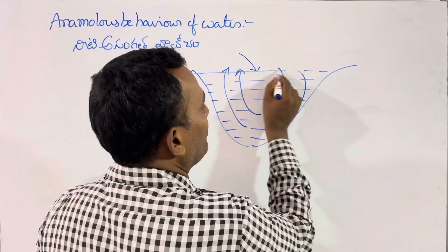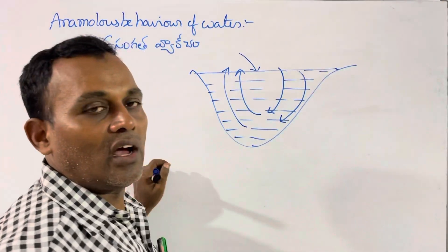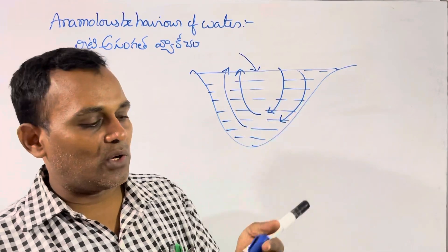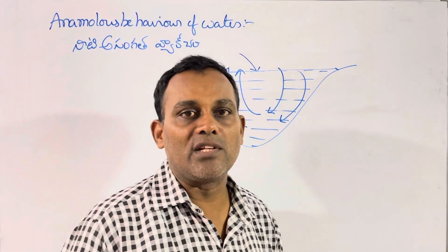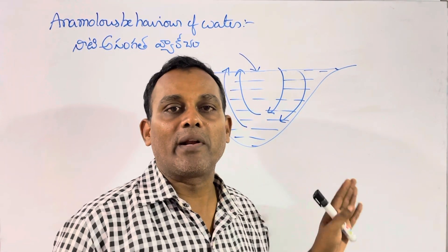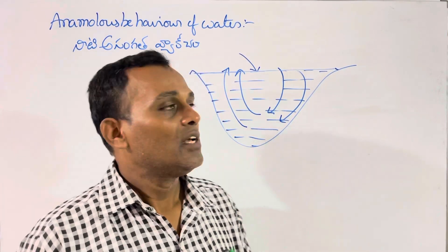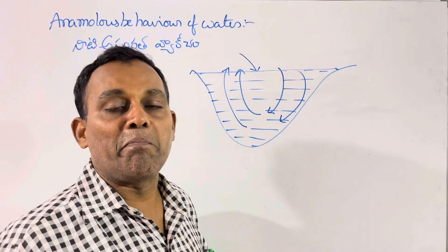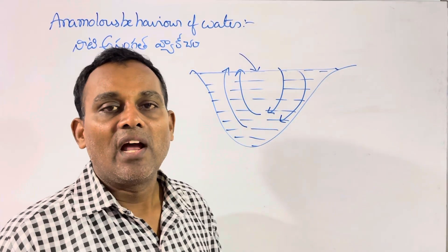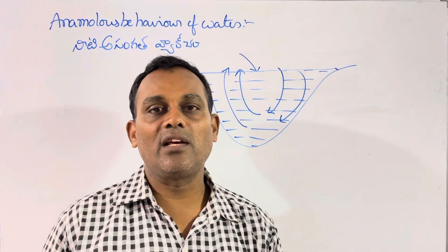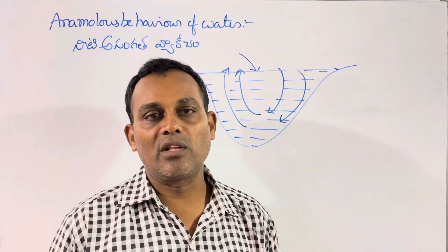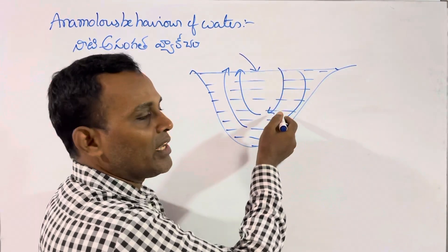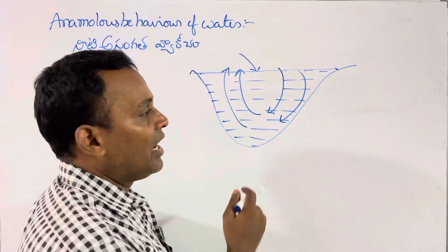The upper layer of the given lake or river is formed as ice. The temperature is very low — zero degrees Celsius. Ice is a bad conductor of heat.